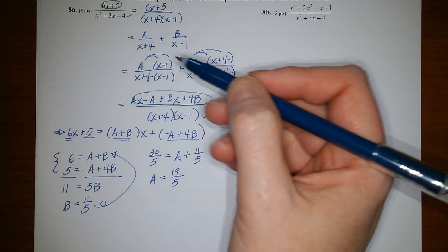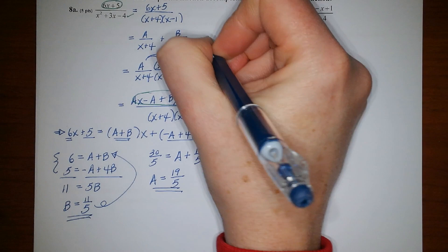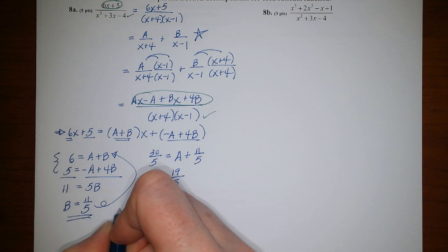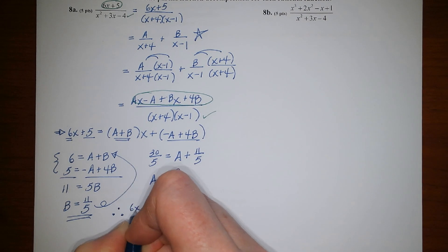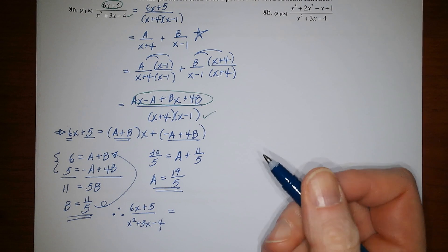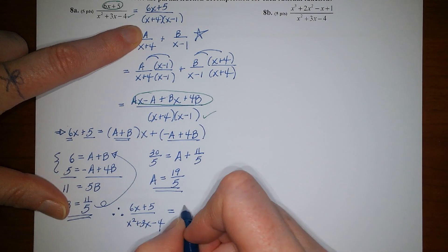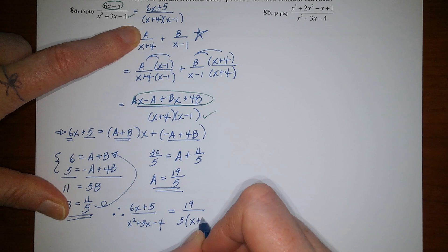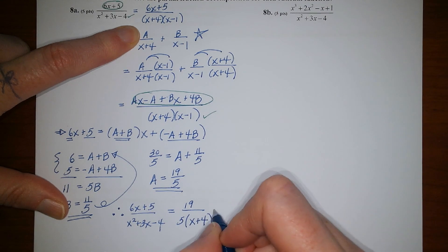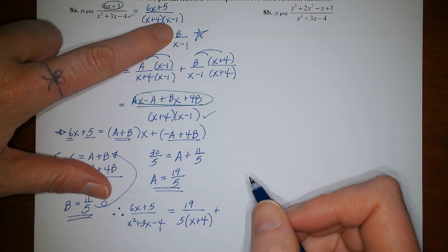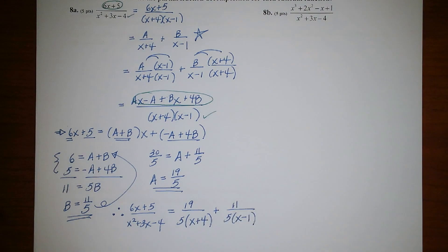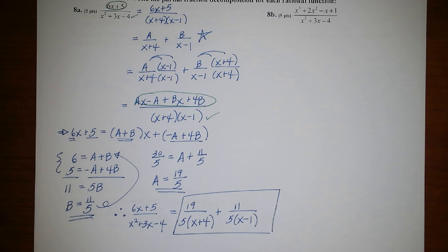Then your last part is to go back and back substitute these two values into your form. And then get your final answer. So the conclusion, 6x plus 5 over x squared plus 3x minus 4 is equal to, okay, so A is 19 fifths. So I'm going to go ahead and clean up the compound fraction. So 19 fifths, and then times the 1 over x plus 4, basically. So you'd end up like that once you clear the compound fraction. And then B is 11 fifths. So put that in. And you'd end up with that. So this right here is the ideal answer. Okay.